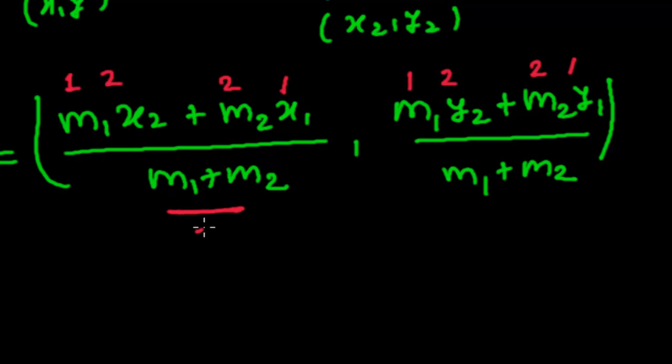And in the denominator there is only 1 plus 2, that is m1 plus m2 everywhere, both are here. So 1-2, 2-1, 1-2, 2-1.